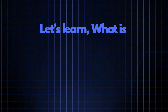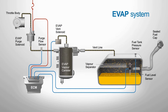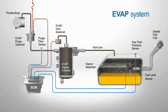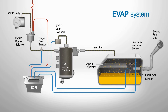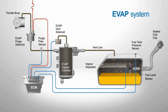Now let's talk about the EVAP system. The purpose of the EVAP system is simple but vital. It's designed to prevent fuel vapors from escaping into the atmosphere, which helps reduce air pollution. Basically, it's a collection of components that create a sealed environment, capturing, storing, and eventually purging volatile fuel vapors from the fuel system.